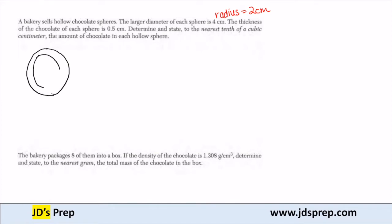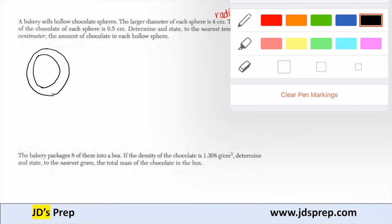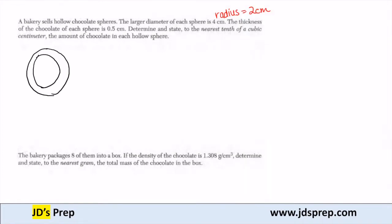So what's happening is we have an inner sphere and an outer sphere. The larger diameter is 4 centimeters, which means our large radius is 2 centimeters.